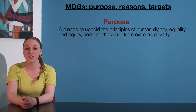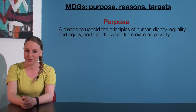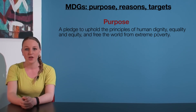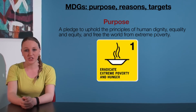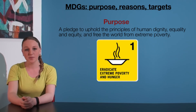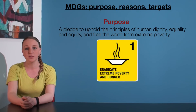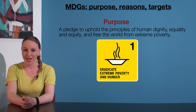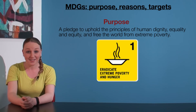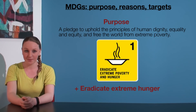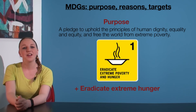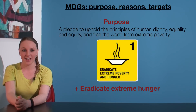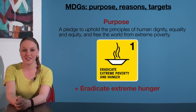The purpose of each individual goal is combined with the self-explanatory purpose of that individual goal. For example, the first MDG, Eradicate Extreme Poverty and Hunger, aims to uphold the principles of human dignity, equality and equity, and free the world from extreme poverty, plus eradicate extreme hunger. The targets of each MDG can also be used here.